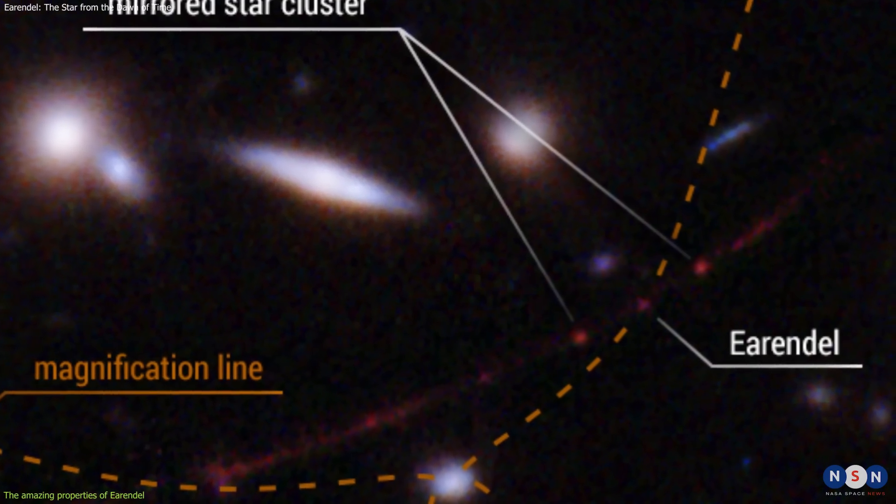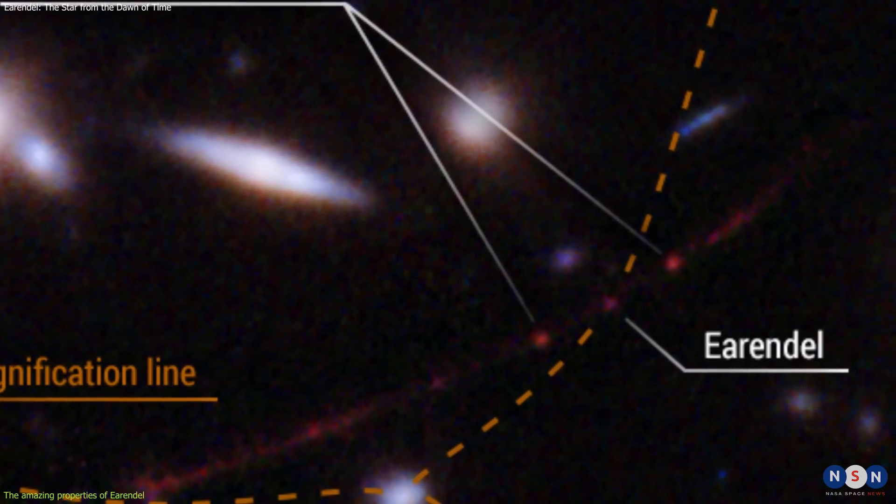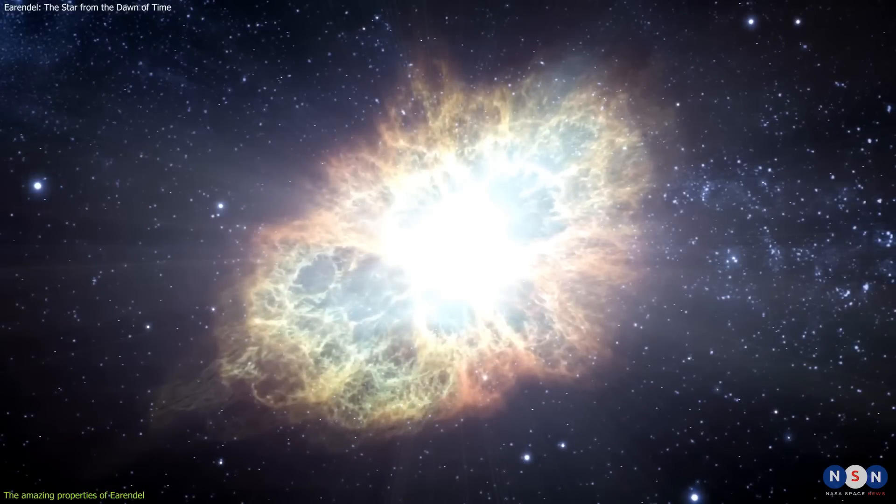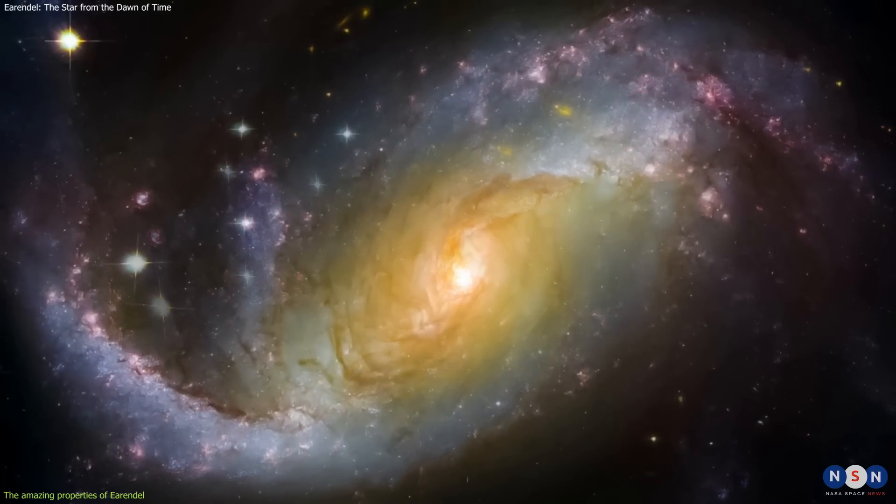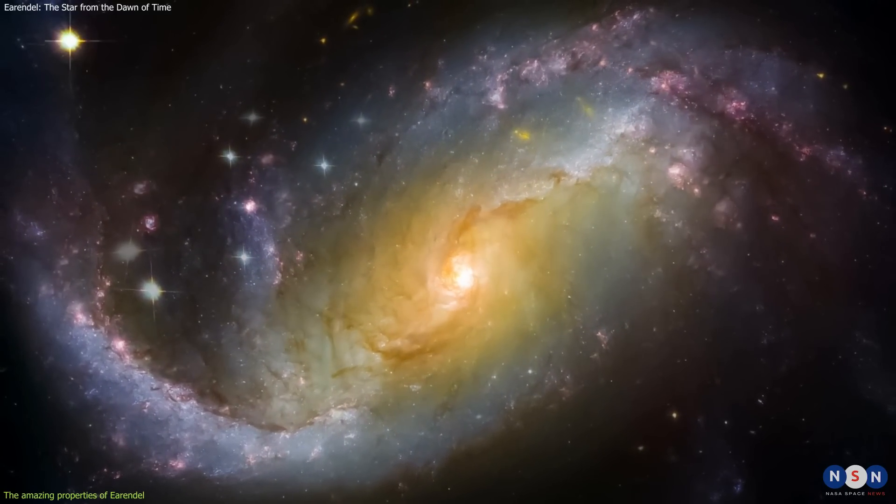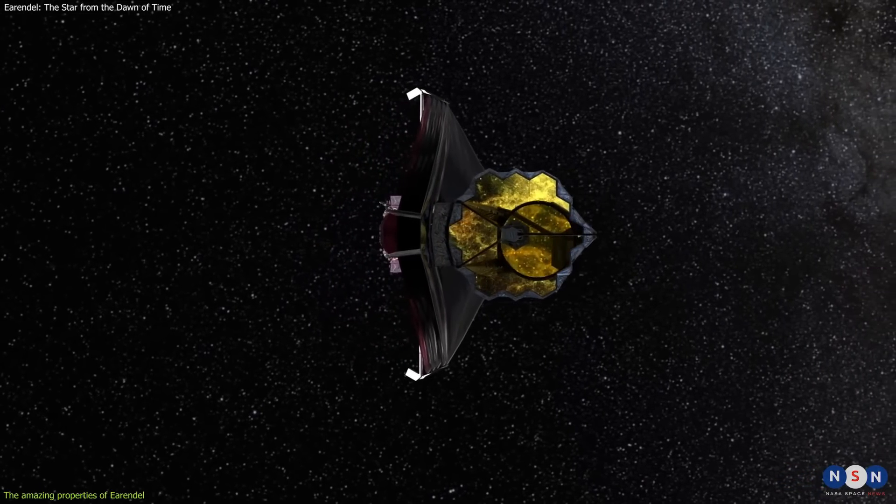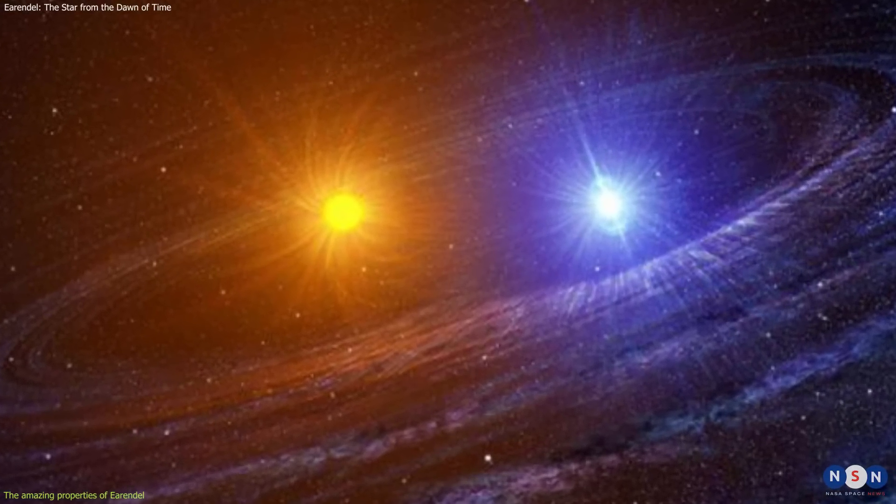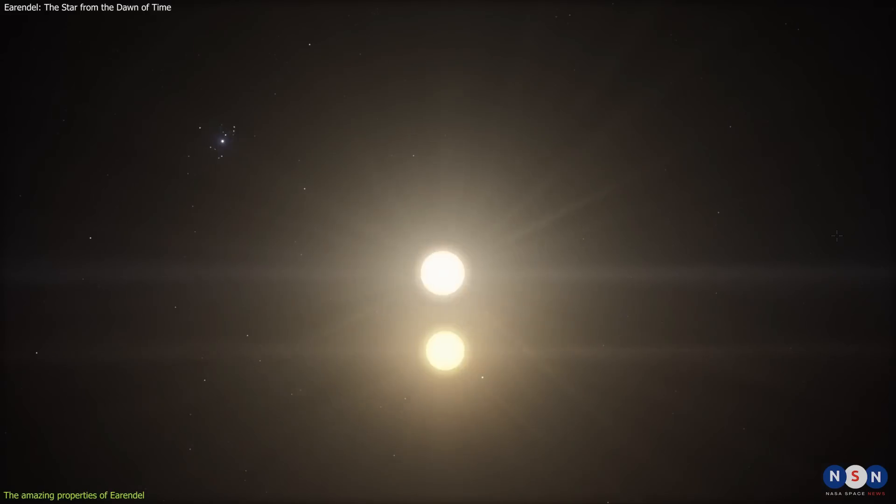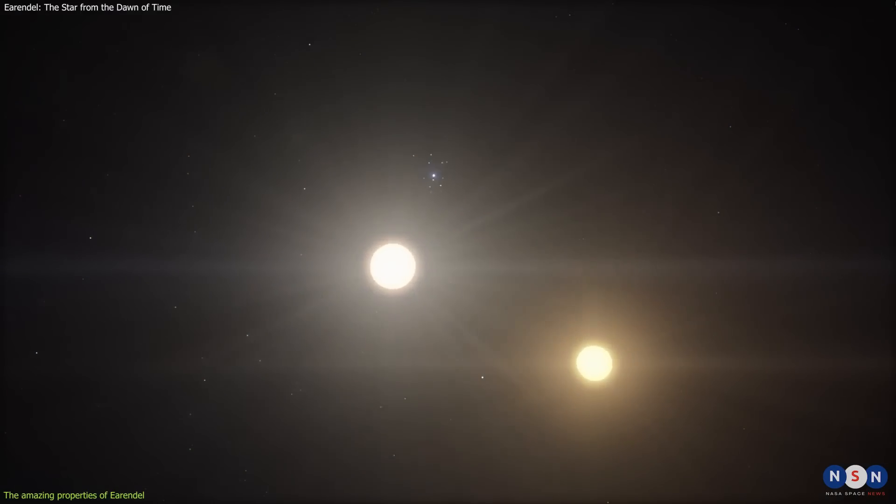This star may have already exploded as a supernova or even a hypernova, leaving behind a compact remnant that we cannot see yet. Another fact is this star may not be alone in its distant galaxy. Based on its colors, Webb's NIRCAM instrument suggests that it has a cooler and redder companion star, meaning that this could be another B-type star or a different type of star that orbits around this star.